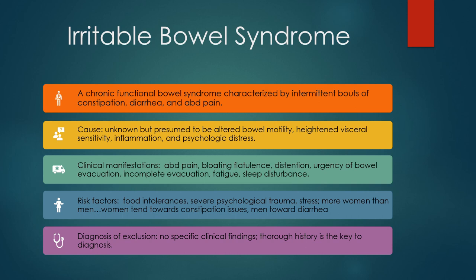Let's move on to irritable bowel syndrome, which is a chronic functional disorder characterized by recurrent abdominal pain associated with disordered bowel movements — either diarrhea or constipation or both — without any identifiable cause. This syndrome is common; about 11 percent of people worldwide have it, and women are more often affected than men. There seems to be a complex interplay of genetics, environmental, and psychosocial factors associated with IBS, with exacerbations from stress, sleep deprivation, neurohormonal dysregulation, bacterial overgrowth, surgery, or infections. The cause of irritable bowel syndrome is still unknown.